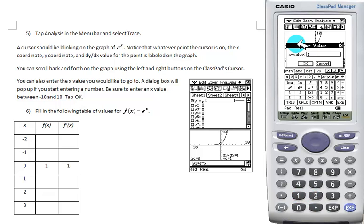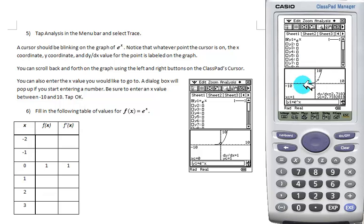Press 1. We want an x value of 1. Hit OK. And we'll get an x value of 1, the corresponding y value, and slope. Notice it's 2.718, approximately e.